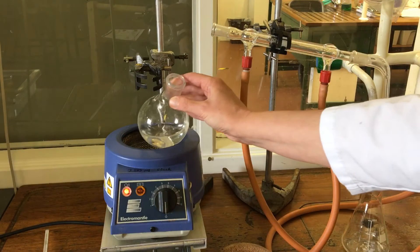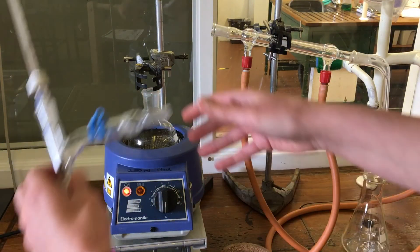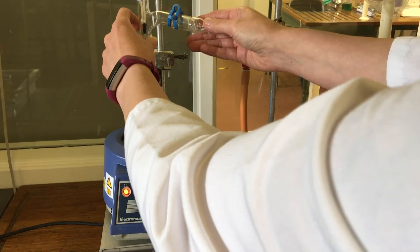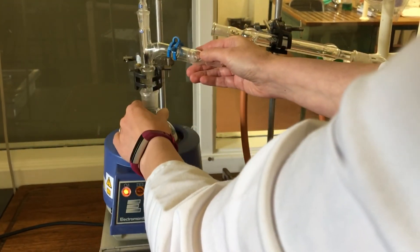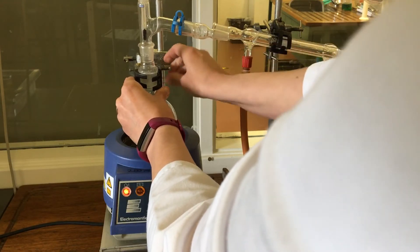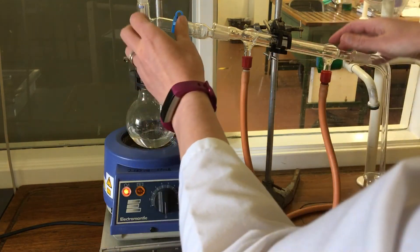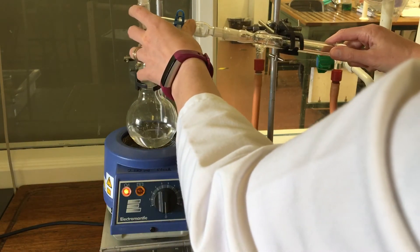So the flask goes into the heating mantle. We're going to add a thermometer and then connect it onto our condenser.